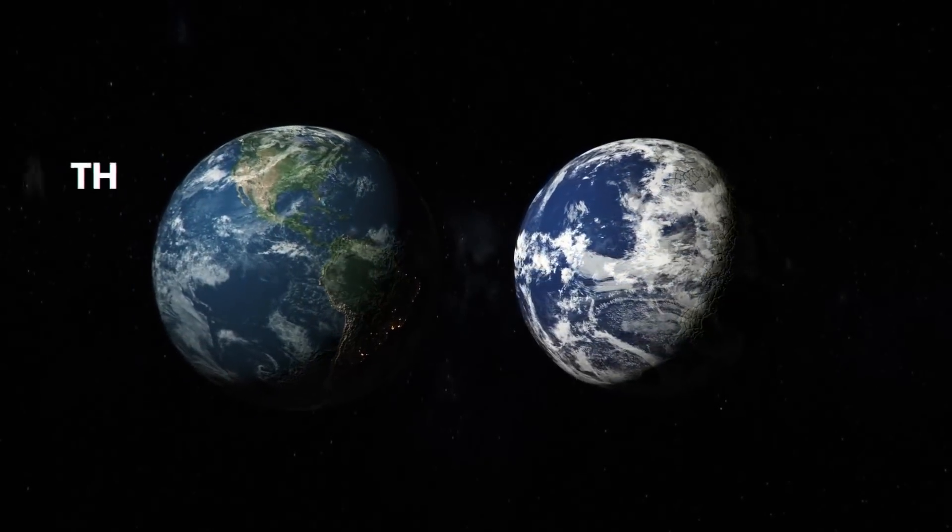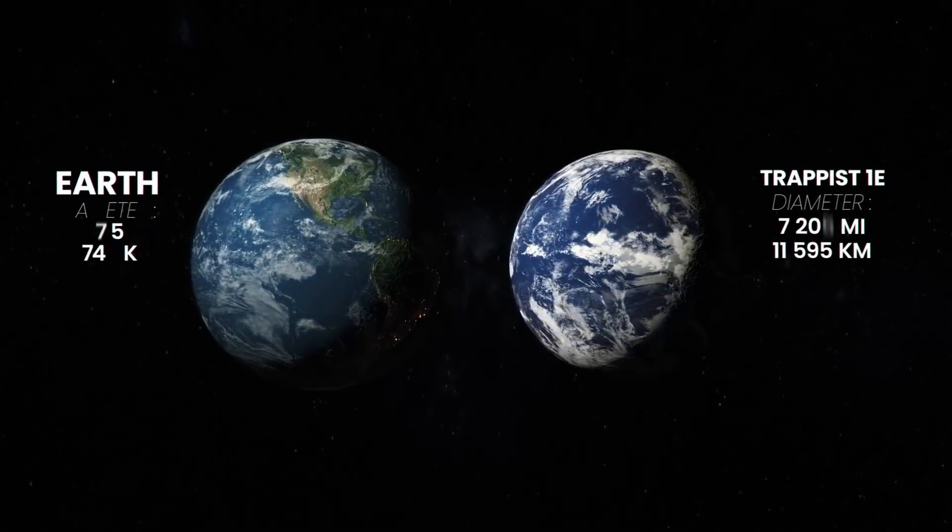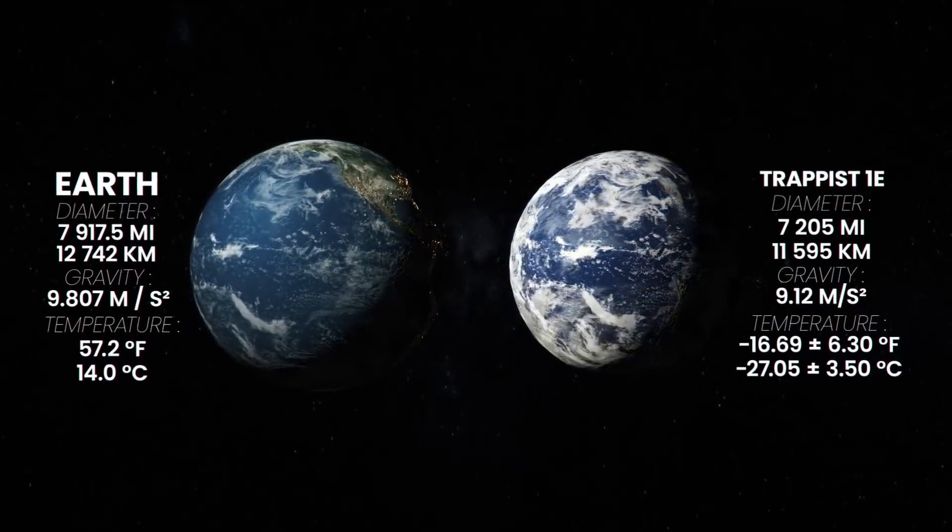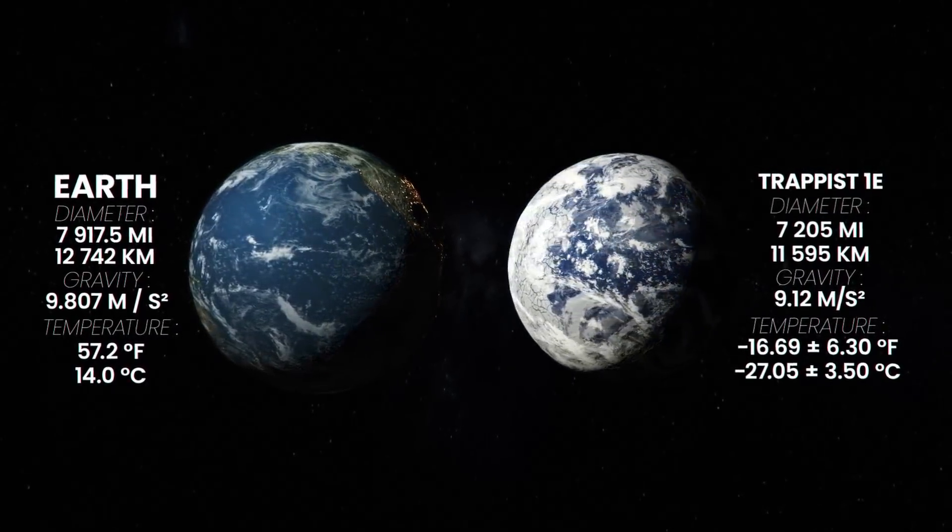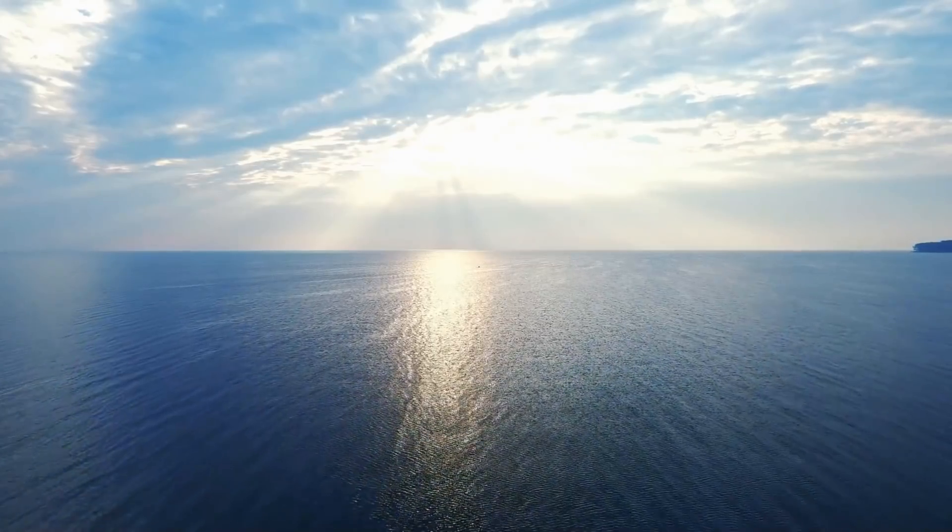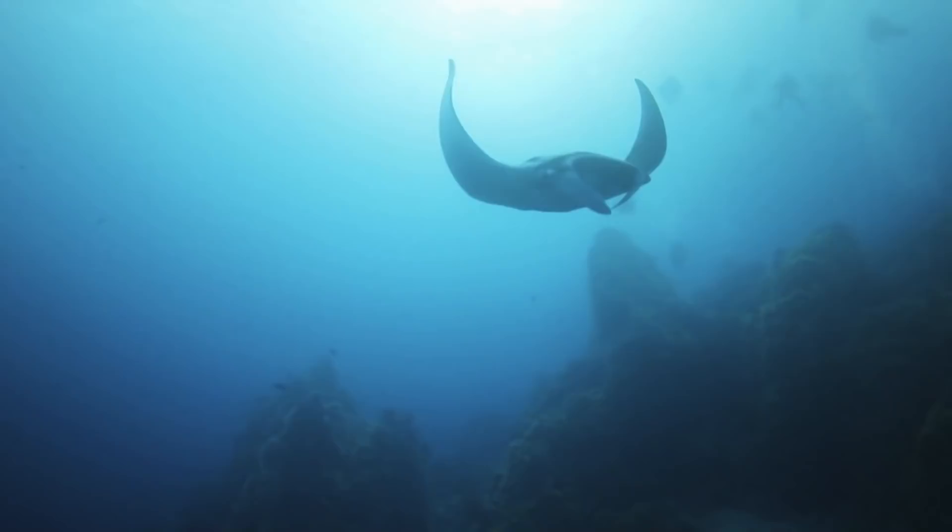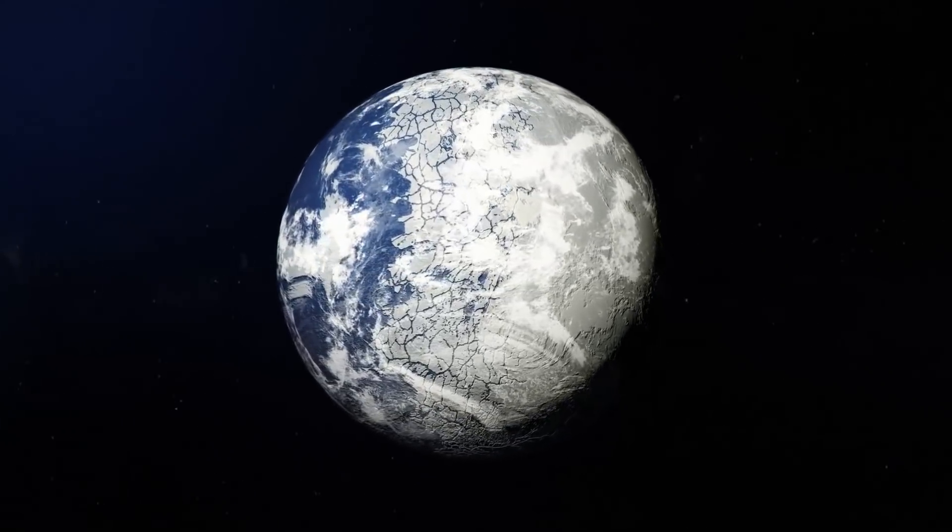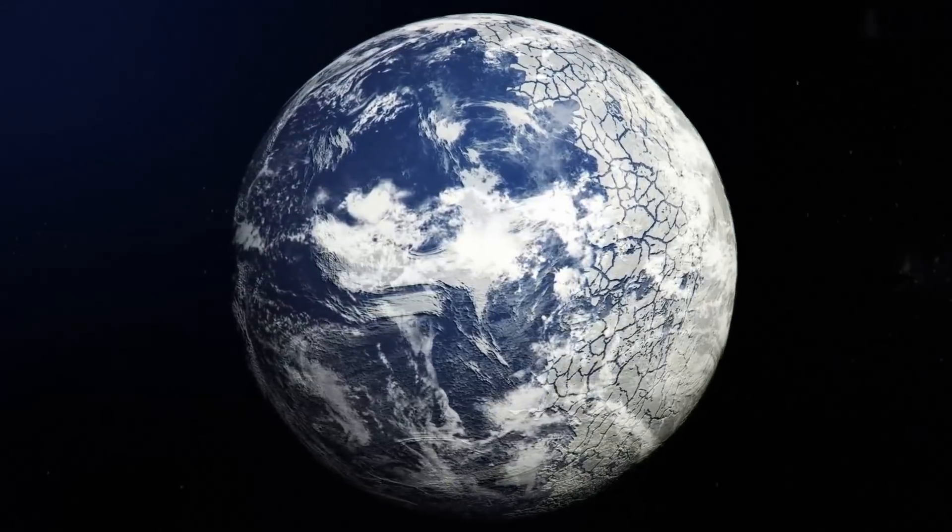Trappist-1e is an exoplanet which orbits around the habitable zone and is similar to Earth's mass, radius, gravity, and temperature. Astronomers say it has a compact atmosphere and this one has the greatest chance of being an ocean planet like Earth. This planet really does have the chance of being potentially habitable for life as we know it.